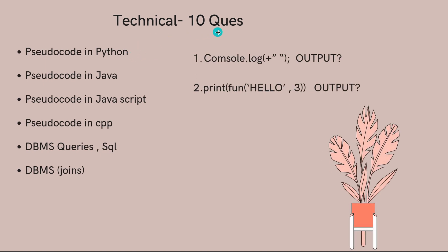Coming to the technical round - the previous one was aptitude with 10 questions, and this is technical with 10 questions. In this round they have given pseudocode in Python, pseudocode in Java, JavaScript, and C++, and they asked DBMS queries and SQL, mainly on joins - left join, right join.